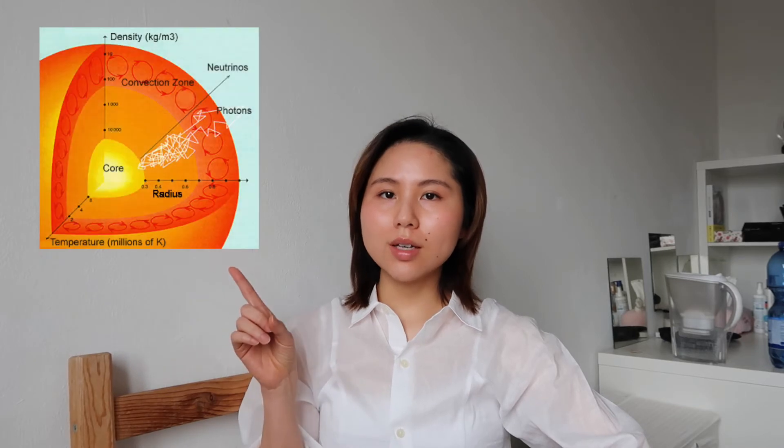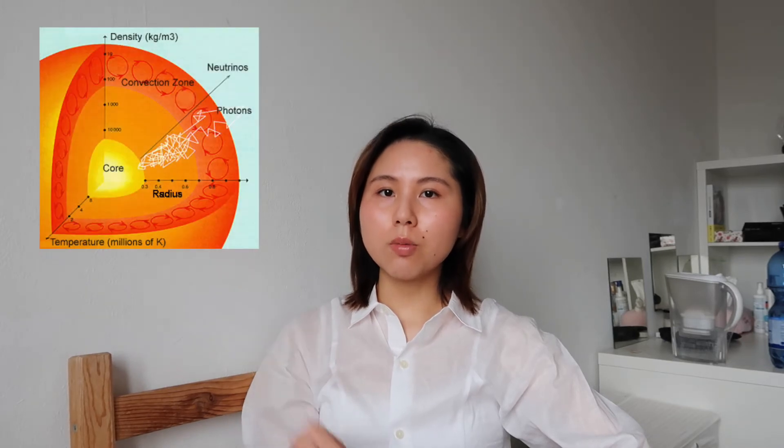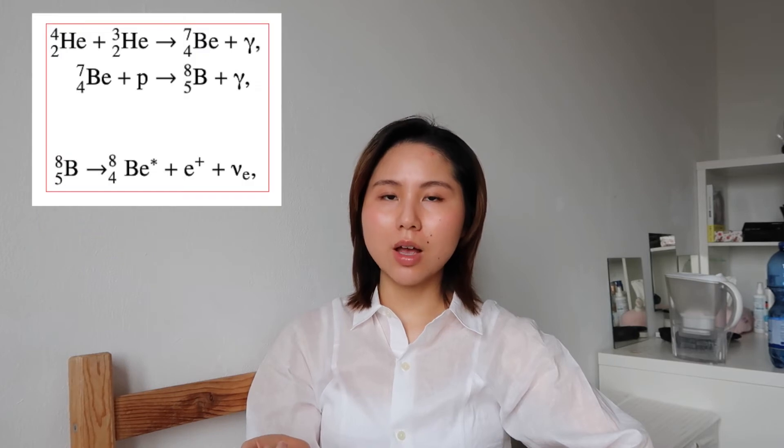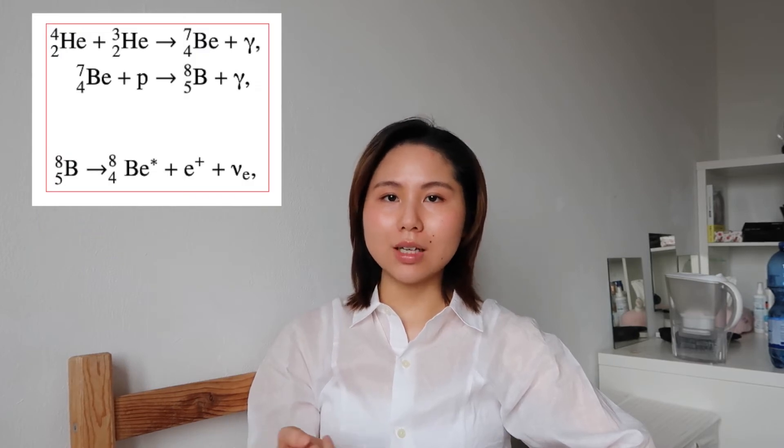Why are we so interested in neutrino oscillation? It is because it can give an answer to two big problems that we have observed before. The first one is the solar neutrino problem — the Sun actually produces a huge amount of neutrinos, however what we observed is less than what we expected.